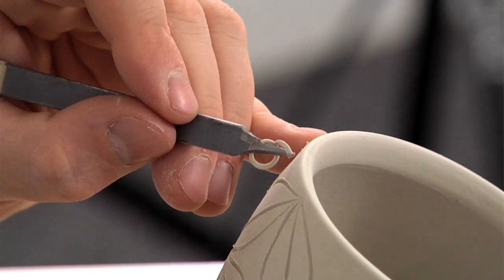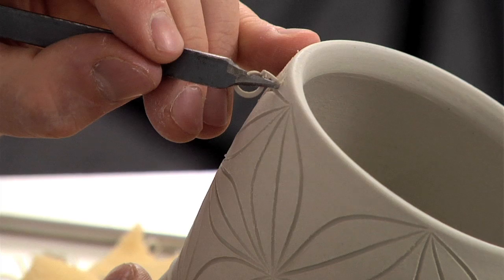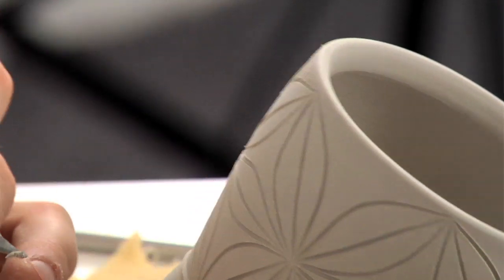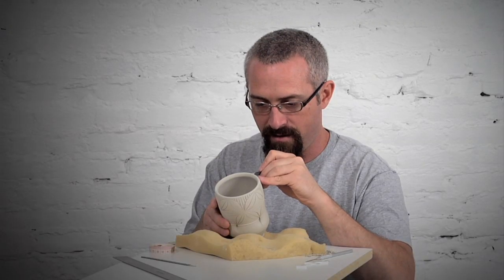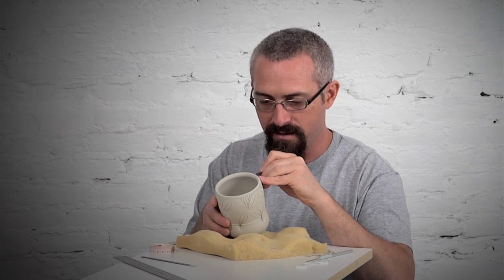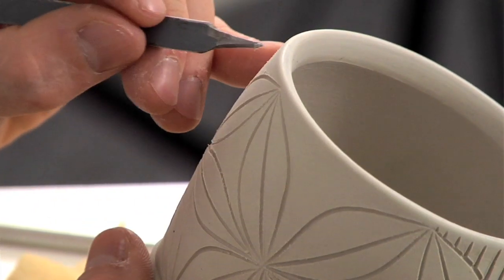Just by having these vertical lines as the background, it really kind of sets that pattern off and brings it off of the surface. Whereas on its own this pattern can be nice, I think it's a lot nicer with the background lines.